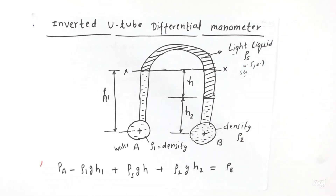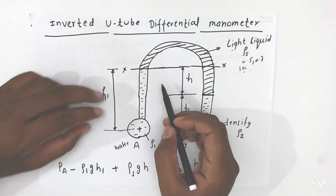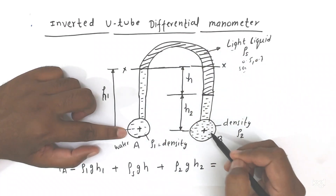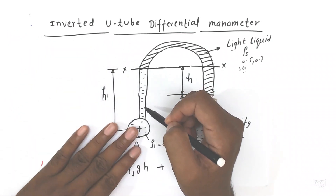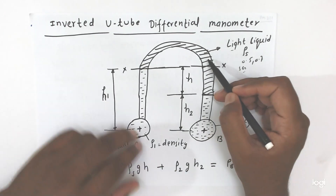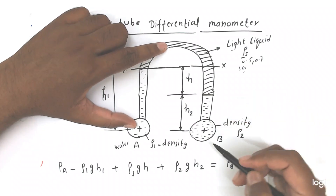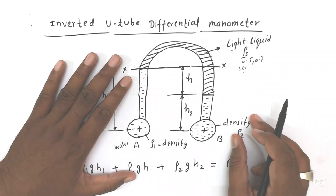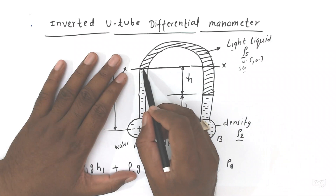Now for pressure calculation — in this case, what is the pressure calculation? This is pipe A, connected to pipe B. From pipe A, one liquid has density rho 1, and here the light liquid has density rho s, and on the other side the liquid density is rho 2. We will consider the datum line from here.